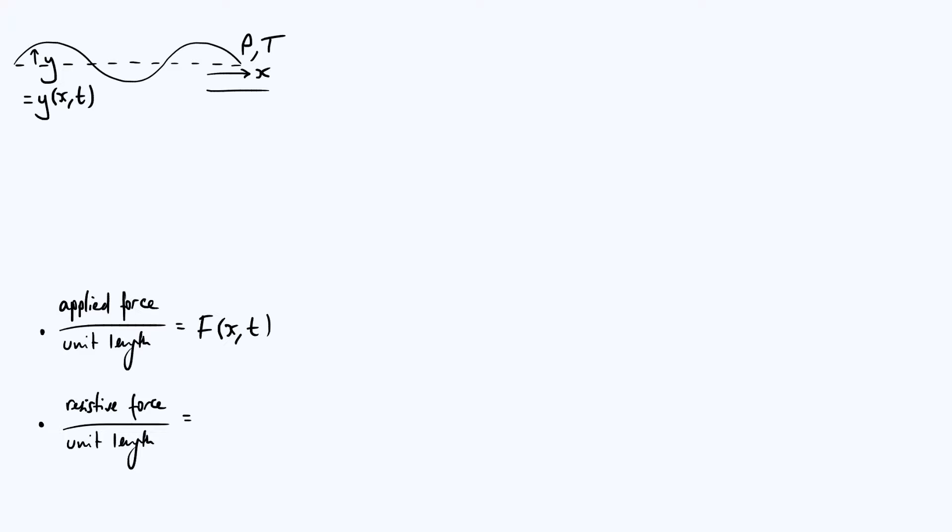We also want to include the effects of damping, in other words, sort of resistive forces acting on the string. So we're going to say that there's a resistive force per unit length acting on the string, which is proportional to the transverse velocity of the string, of a particular element of the string.